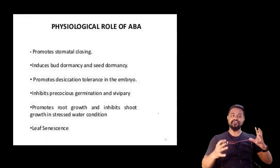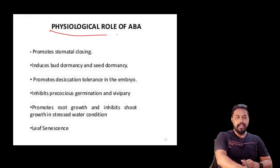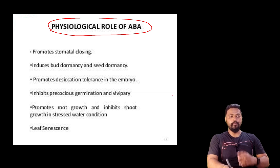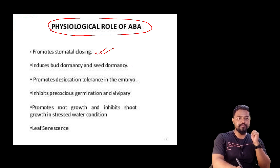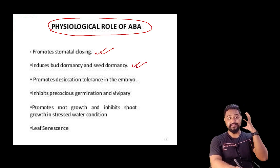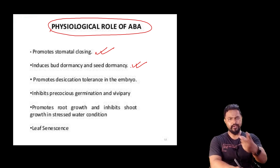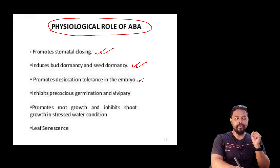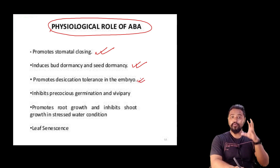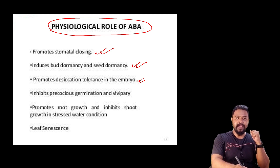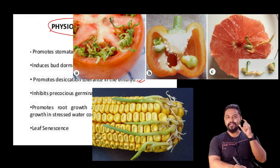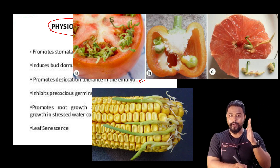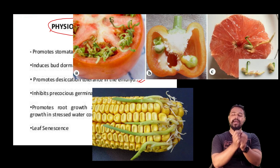Now the physiological roles of Abscisic acid: it promotes stomatal closing, induces bud dormancy and seed dormancy, and promotes desiccation tolerance in embryos. It also blocks precocious germination — meaning it prevents the seed from germinating before the appropriate time.